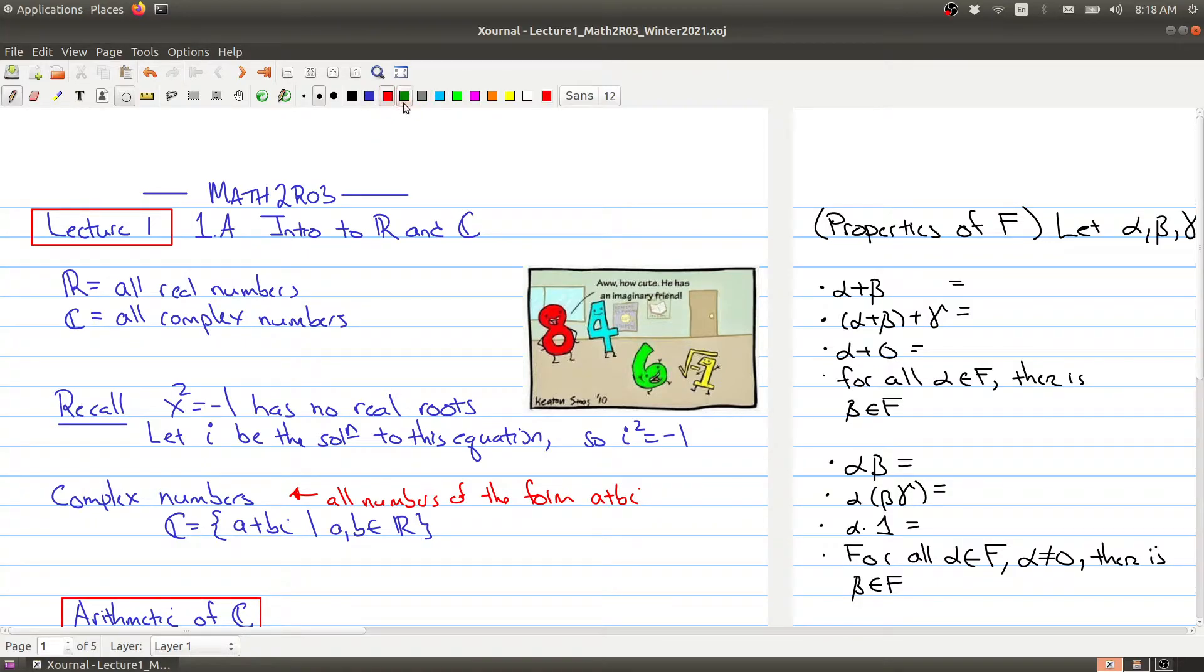So an example of a complex number would be something like 2 plus 3i, or I could have 3 minus πi, I could have 2π just by itself, that's also a complex number, that's the case where b is equal to zero, or I could have something like minus 17i, so that's another example of a complex number.